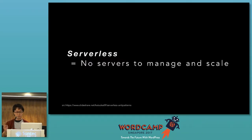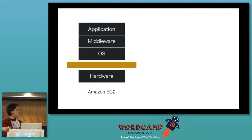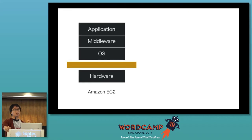The Amazon team says that serverless means no servers to manage and scale. For example, with current web servers like Amazon EC2 or many VM clouds, we have to manage three things: first is the application, second is middleware like Nginx or Apache, and third is the OS like Linux or Ubuntu. We have to manage many things.